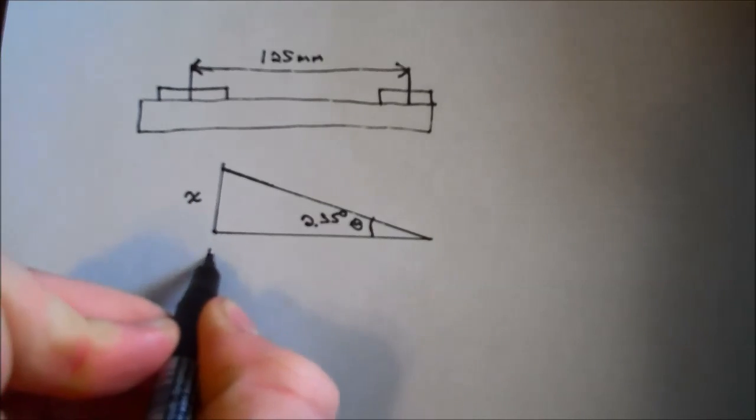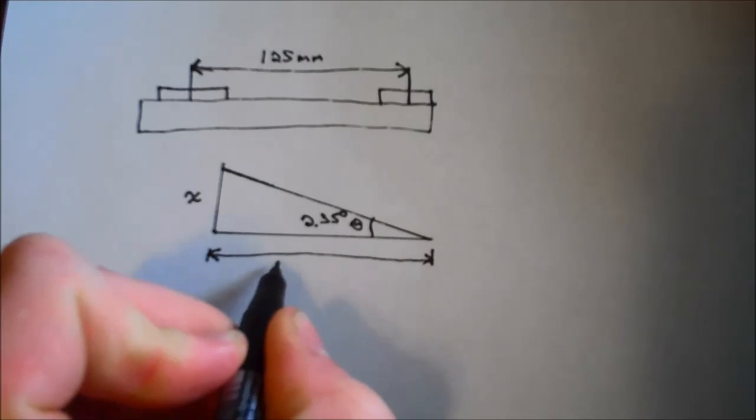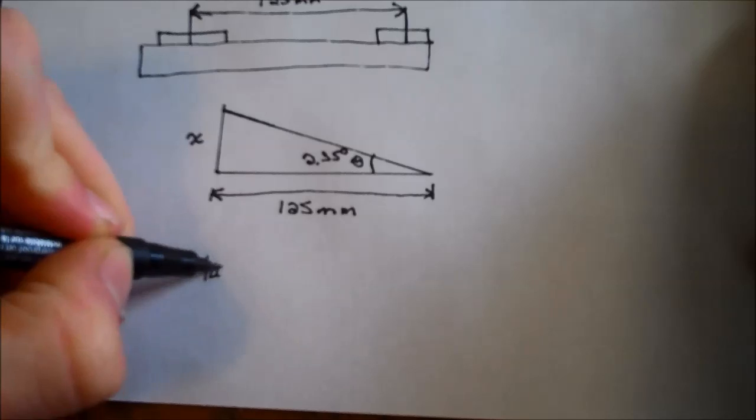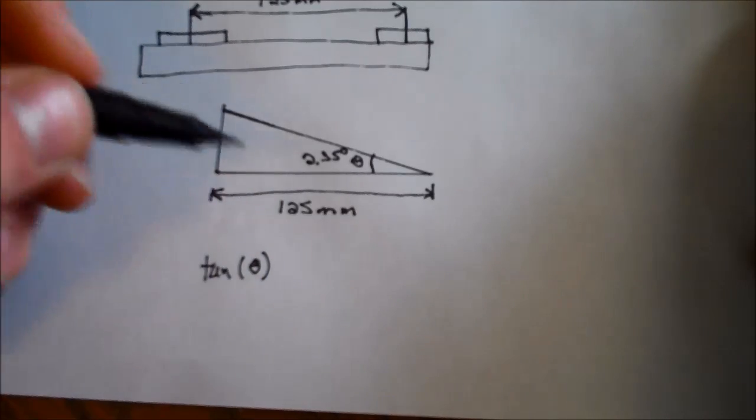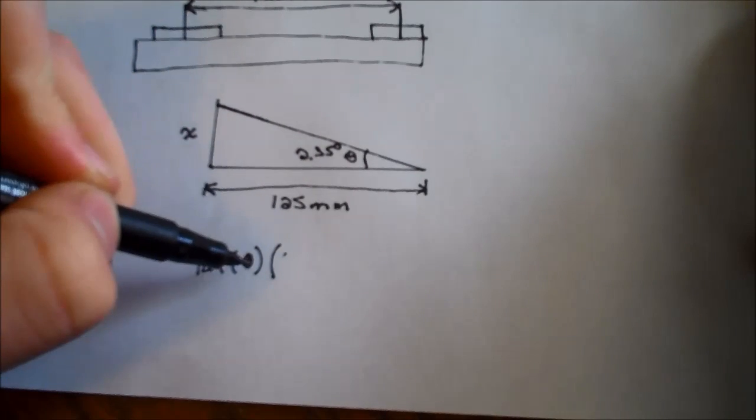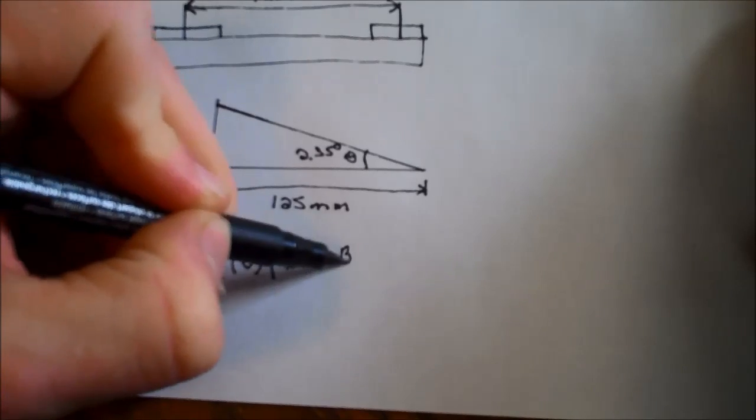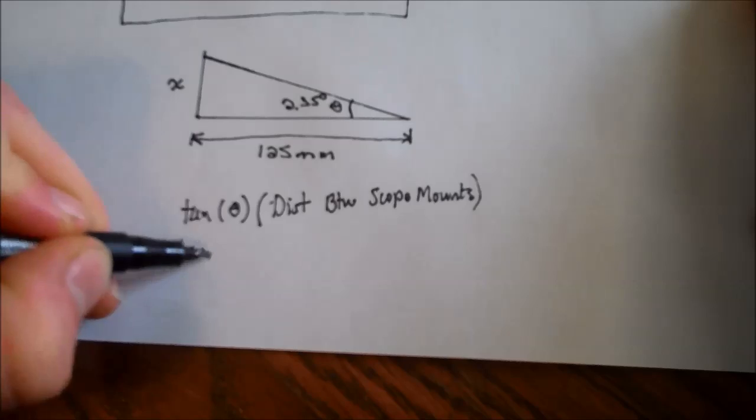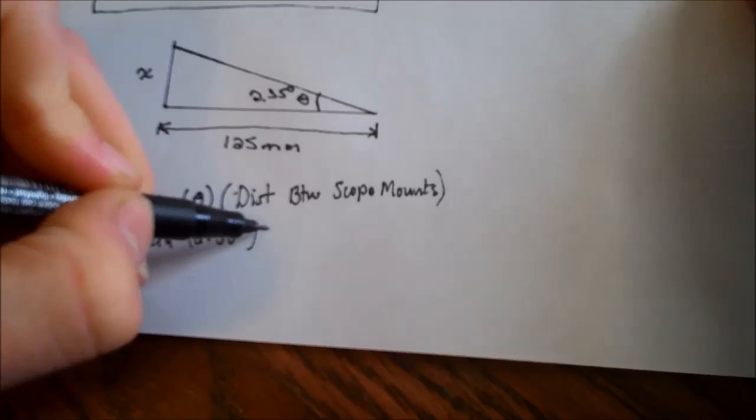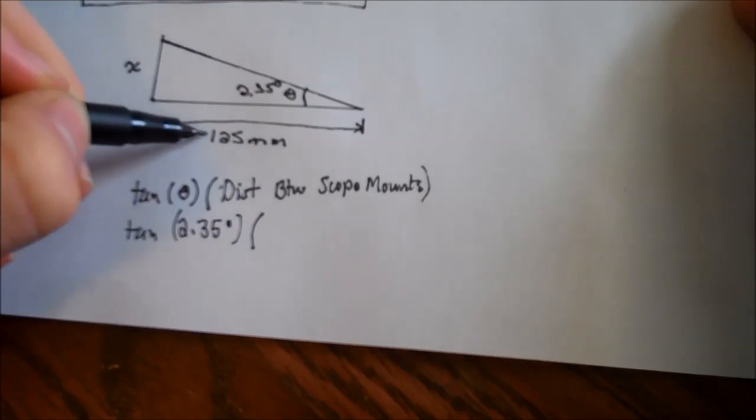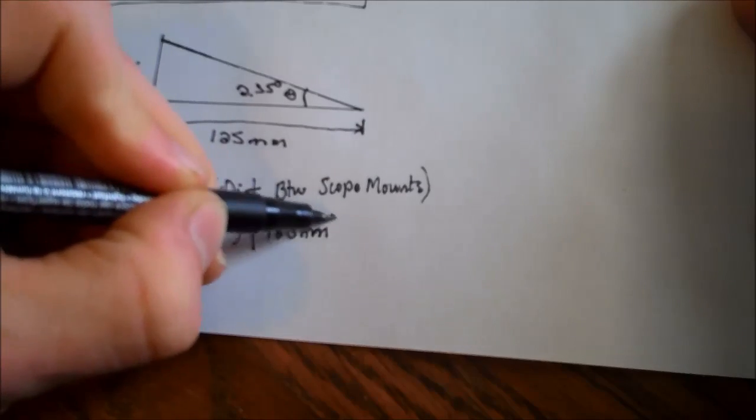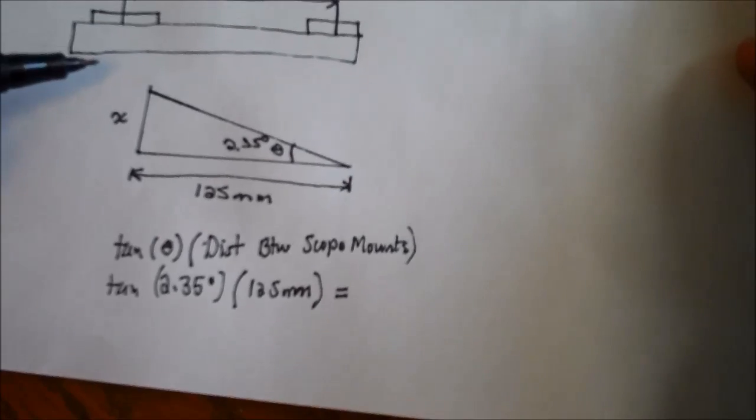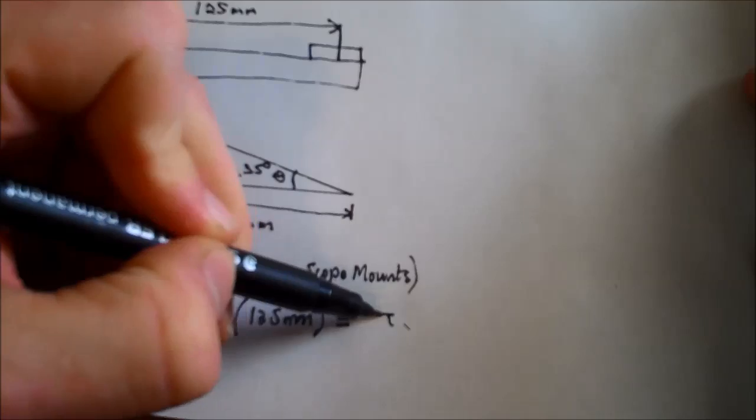And this is pretty easy once we know the distance between these scope mounts, which we knew is 125 millimeters. Once again, we're just going to use a little bit of trig. And that equation is going to be tangent of the angle, the scope angle that you want to get as close to as you can, multiplied by the distance between scope mounts. And so if we use our numbers, it's going to be tangent of 2.35 degrees. And that number multiplied by the distance between the scope mounts, which was 125 millimeters. And that will spit out a number, which is the number of millimeters higher that we want the rear mount to be than the front mount. And that comes out to be 5 millimeters.